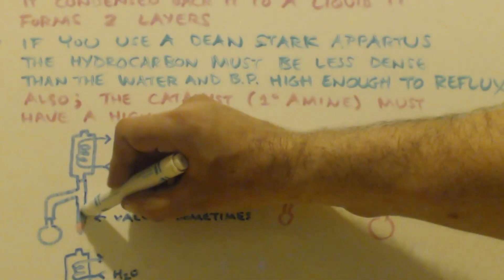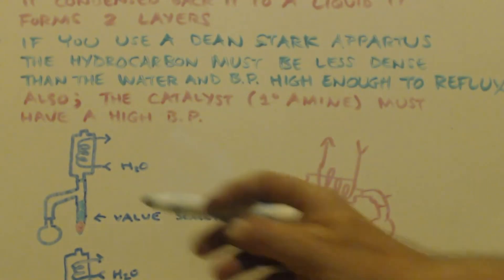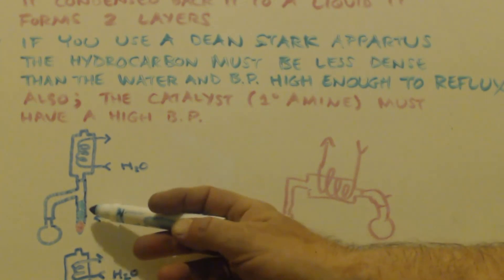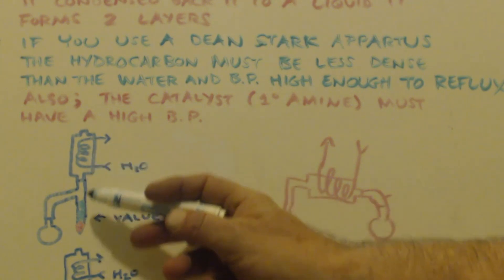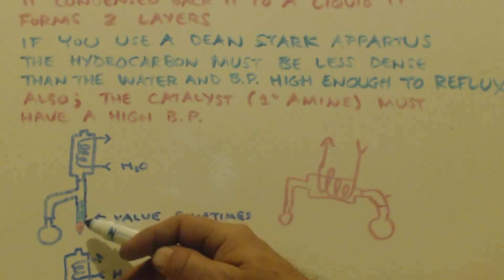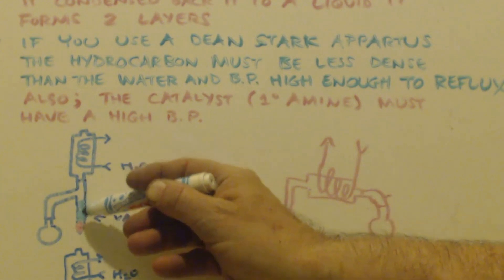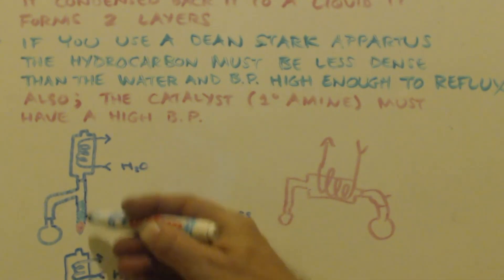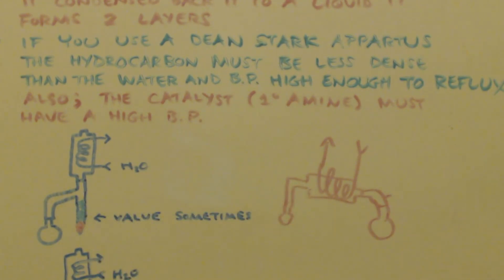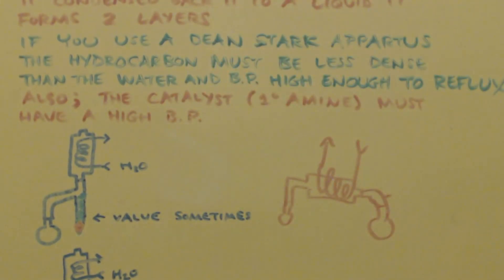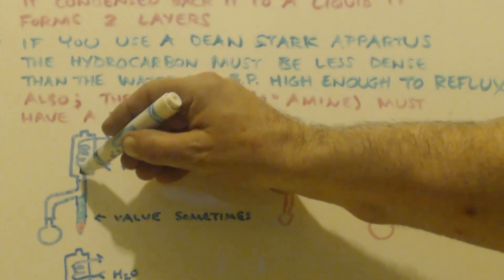The collection vessel keeps filling up with the hydrocarbon — say toluene or benzene. As the condensate drips down, it forms an azeotrope and then separates into two layers. You'll actually see the water as a drip going straight through the hydrocarbon layer to the bottom. You'll know you're done because when it drips you won't see any water going down to the bottom anymore. Also, water production will slow down noticeably.